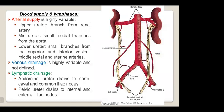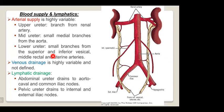The ureteric blood supply comes from three major arteries: the upper ureteric artery, a branch of the renal artery; the mid-ureteric artery, a small medial branch from the aorta; and the lower ureteric artery, a small branch from the superior and inferior vesical, middle rectal, and uterine arteries. Venous drainage is highly variable and not well defined. Lymphatic drainage: the abdominal ureter drains to the aorto-caval and common iliac nodes; the pelvic ureter drains to the internal and external iliac nodes.